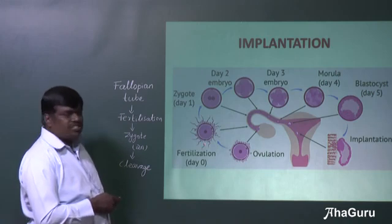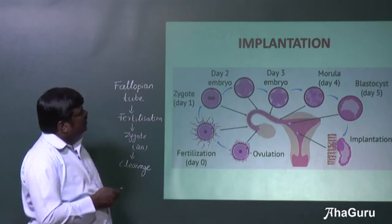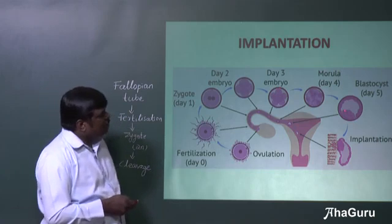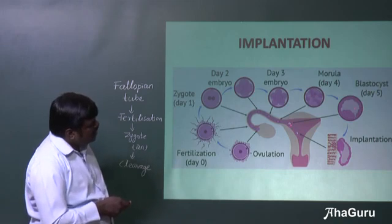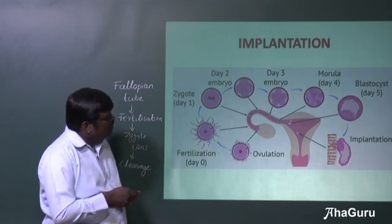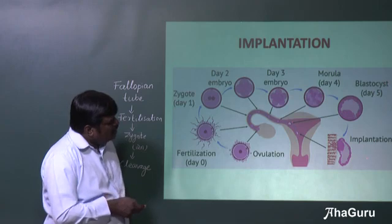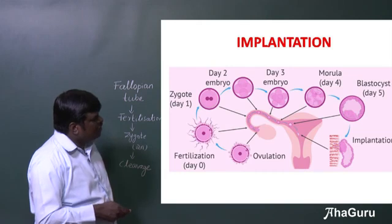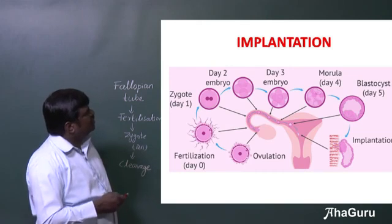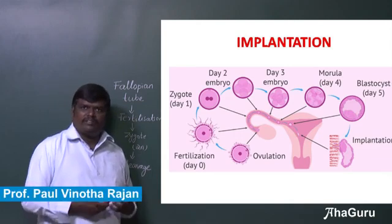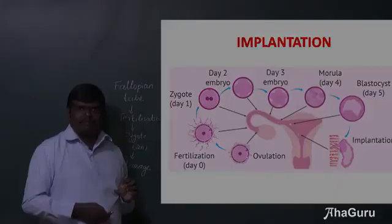On the first day: fertilization. By the fourth day it becomes a morula, and on the fifth day it becomes a blastocyst. It is at the blastocyst stage that implantation takes place. The fertilization takes place in the fallopian tube, and slowly the ovum moves along the fallopian tube and gets implanted — implantation means attached — to the uterus. Implantation takes place exactly at the fifth day after fertilization. Thank you.